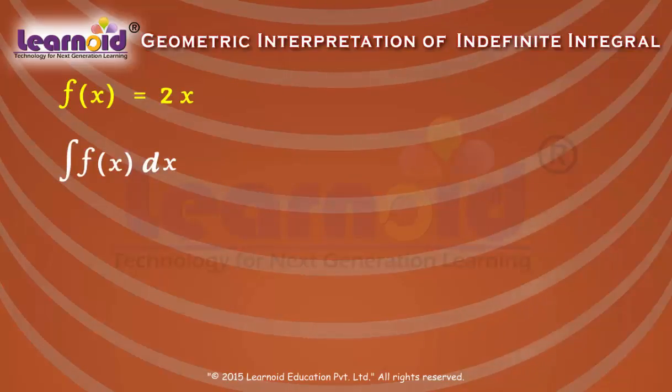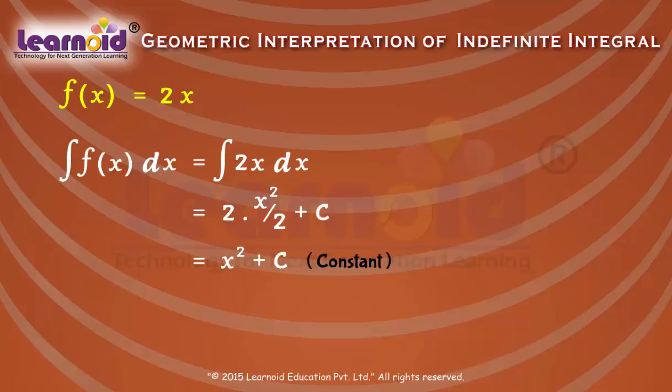The integral of function 2x is x squared plus constant c. For different values of c, we get different integrals.